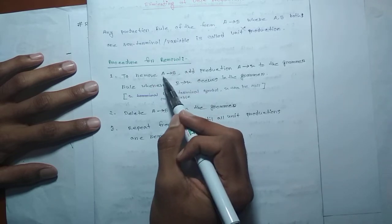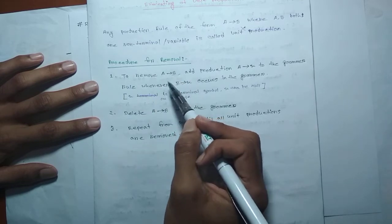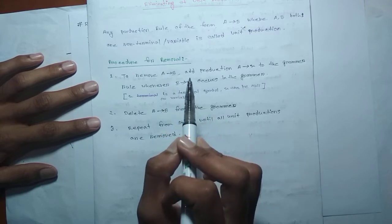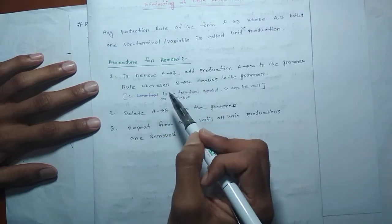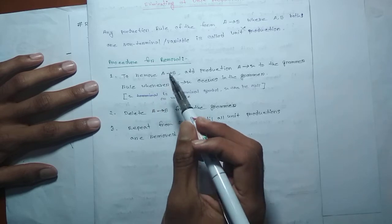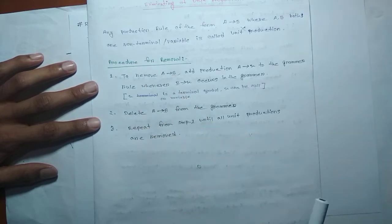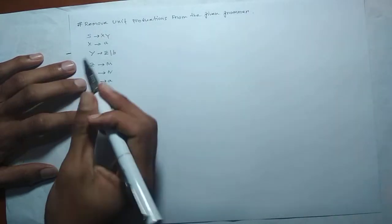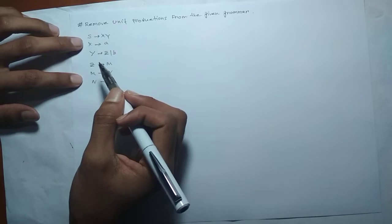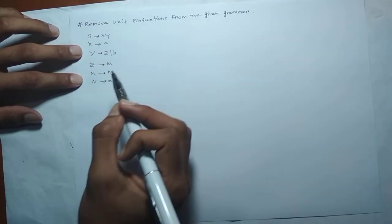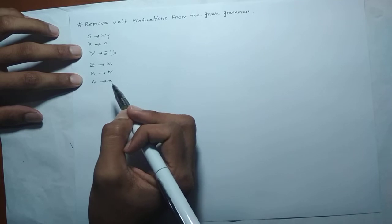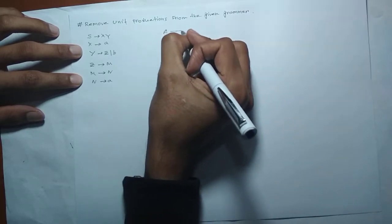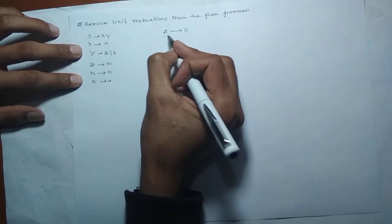We can see that B derives something. We can cancel out and remove the unit production from the grammar. We can see that here there is a derivation, which is a drive of B.